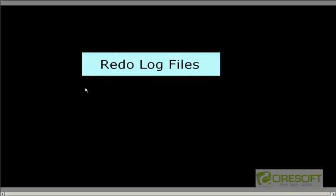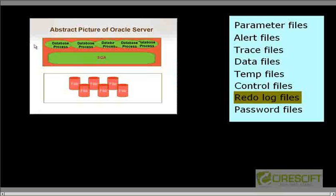Hello, welcome back to Oracle DBA tutorial. In this tutorial we are going to discuss about redo log files. This is an abstract picture of the Oracle server, which consists of an instance and file system. We have already explained in our last videos about parameter files, data files, temp files, and control files. In this video we are going to discuss about redo log files. Redo log files are essentially a transaction log of the database — by following the redo log files I can take my database to a particular state.